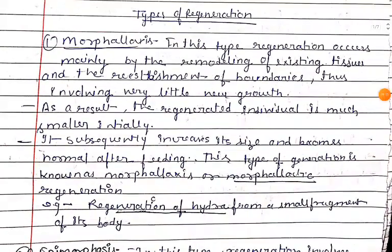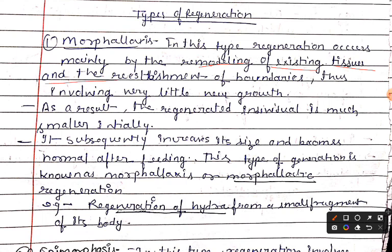There are different types of regeneration. First we have Morphallaxis. In Morphallaxis, this type of regeneration occurs mainly by the remodeling of existing tissues and re-establishment of boundaries, thus involving very little new growth. The existing tissues are remodeled and boundaries re-established, so it does not grow significantly.